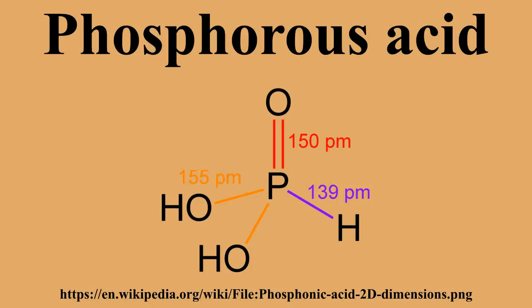On an industrial scale, the acid is prepared by hydrolysis of phosphorus trichloride with water or steam: PCl3 + 3H2O → H3PO3 + 3HCl. In practice, aqueous potassium phosphite is treated with excess hydrochloric acid. By concentrating the solution and precipitation with alcohols, the pure acid can be separated from the salt.